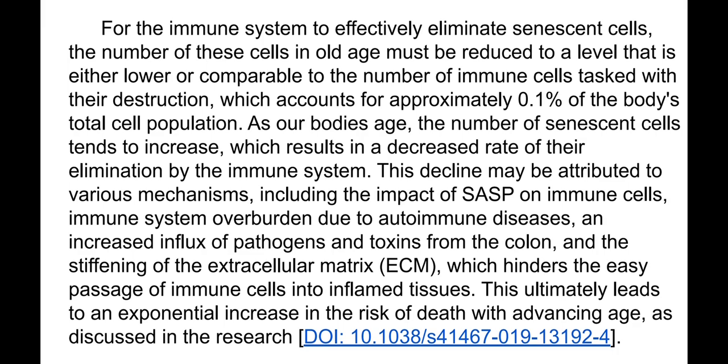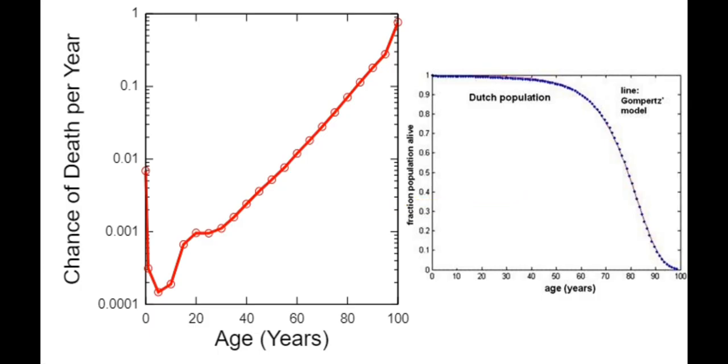This accounts for approximately 0.1 percent of the body's total cell population. As our bodies age, the number of senescent cells tends to increase, resulting in a decreased rate of elimination by the immune system. This decline may be attributed to the impact of SASP on immune cells, immune system overburden due to autoimmune diseases, increased influx of pathogens and toxins from the colon, and stiffening of the extracellular matrix — which hinders passage of immune cells into inflamed tissues. This ultimately leads to an exponential increase in the risk of death with advancing age.